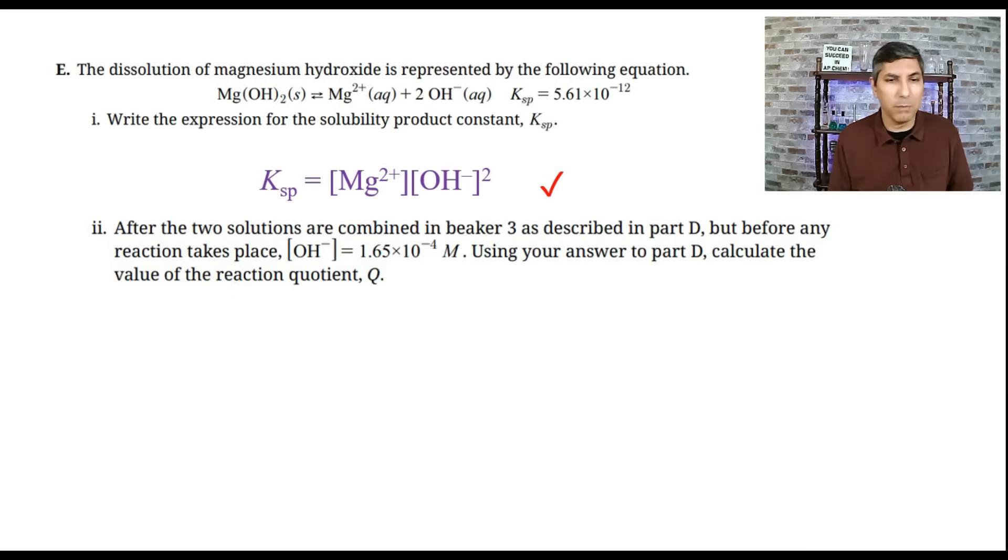Now, part two says after the two solutions are combined in beaker three as described in part D, but before any reaction takes place, the concentration of hydroxide ion is 1.65 times 10 to the negative fourth moles per liter. Using your answer to part D, calculate the value of the reaction quotient Q. So once again, Q looks just like K, except it's not necessarily at equilibrium. So we just plug in the values. In the last part there, part D, we said that the magnesium ion concentration was 7.62 times 10 to the negative fourth moles per liter. And the problem right here tells us that the hydroxide concentration is 1.65 times 10 to the negative fourth moles per liter. So we calculate this, and you find that the value for Q is 2.07 times 10 to the negative 11. So give yourself a point if you said that.